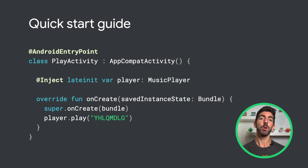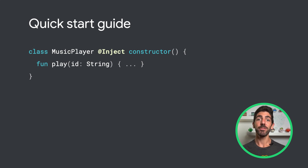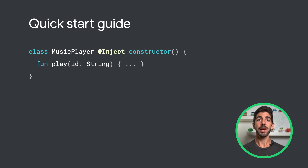But how does Hilt know how to provide instances of type MusicPlayer? Well, it doesn't at the moment — we need to let Hilt know how to do it using annotations. Annotating the constructor of a class with @Inject tells Hilt how to create instances of that class. This is all that's needed to get a dependency injected into an activity. We started with a simple example, as MusicPlayer doesn't depend on any other type. But if we had other dependencies passed as a parameter, Hilt would take care of that and satisfy those dependencies when providing an instance of MusicPlayer.